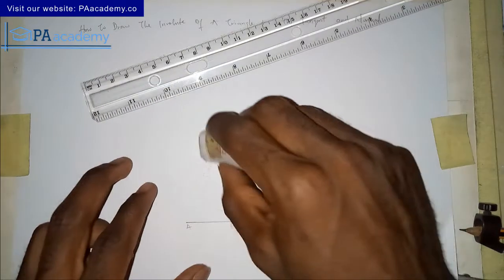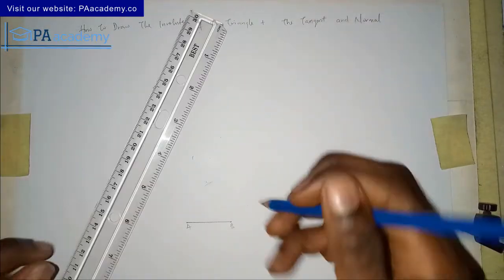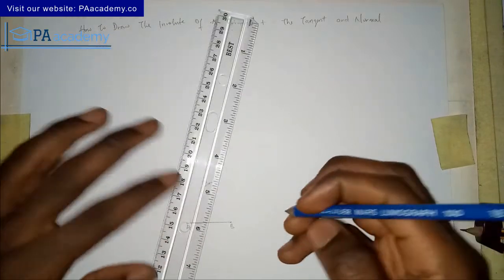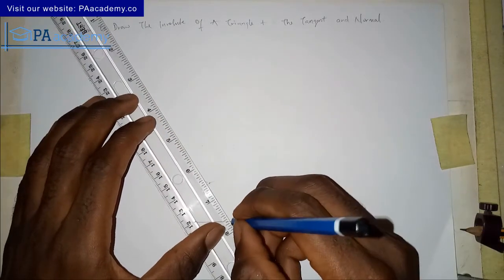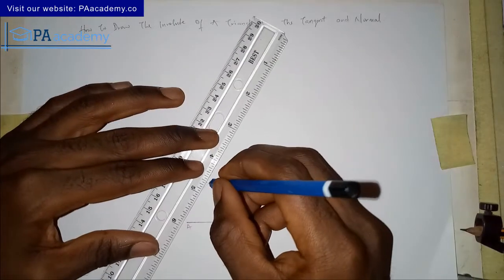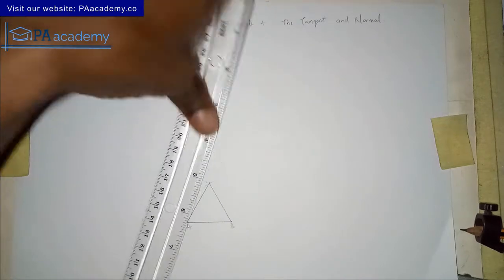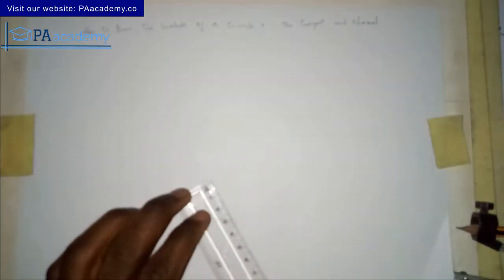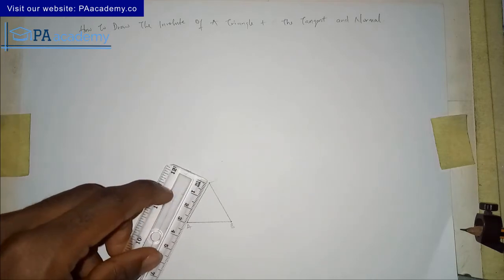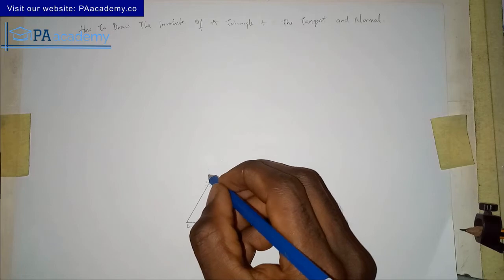Whenever you are drawing yours, you have to be careful to avoid errors. From the point of intersection, you are going to join it to A and join it to B. That is going to give us our equilateral triangle. If you measure it around, you are going to have three centimeters on each side. Let me call this point C.